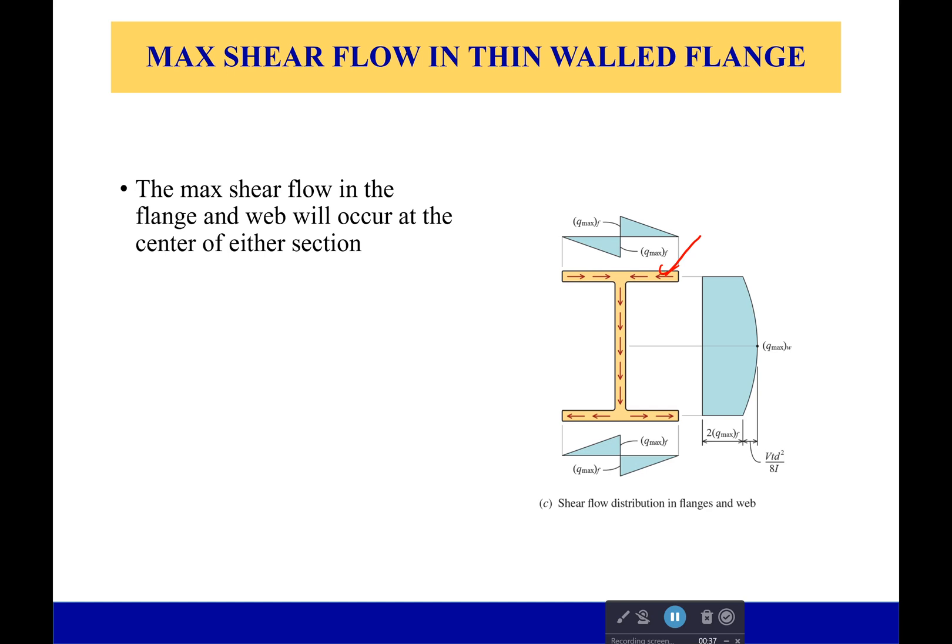So the max shear flow in the flange and the web is going to occur at the center of either section. You might be wondering why is this? Well, let's think about it. Our shear stress and therefore our shear flow has to be zero at any free end. If it's not a free end, it's gonna have to pop off—no, we don't want that. We want things to stay stable.